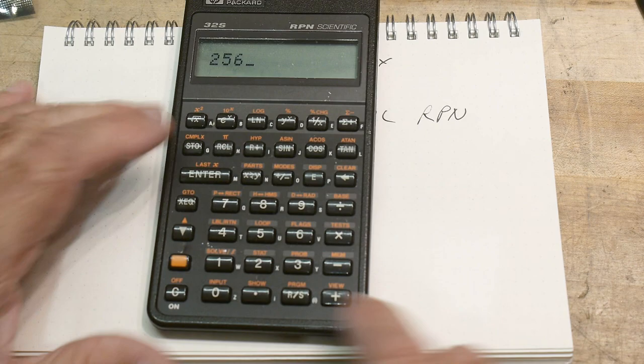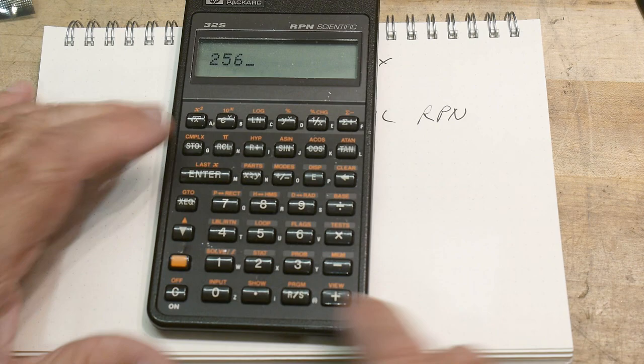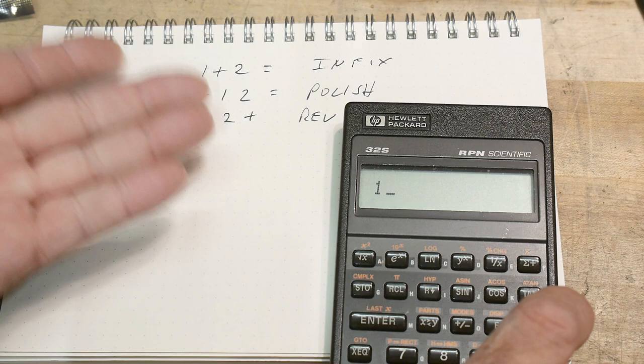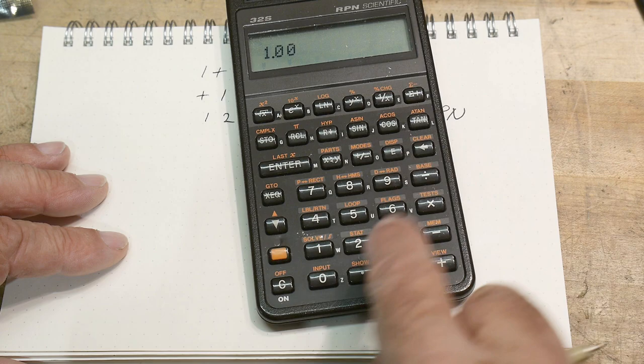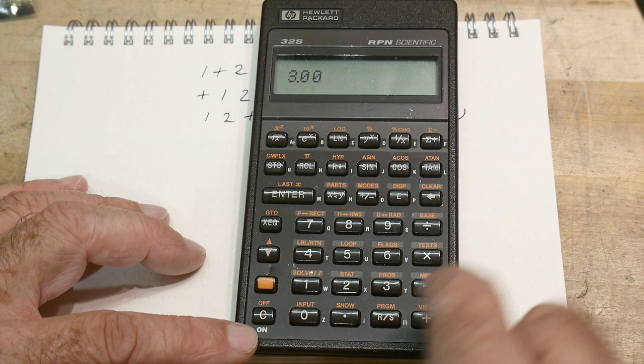So we have RPN here. So to add two numbers, you would say 1, and then you have to, well, what do you do with 1? You can't put in 2 yet. You have to do something. And so you hit the enter button, then you hit 2, and then you hit plus, and then it puts those two together and you get 3, okay? So 1 plus 2, 3 plus 1, 5, 9 plus,